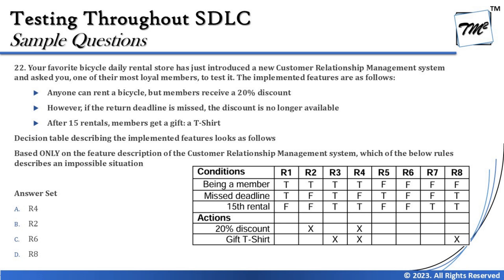The next question is about decision table testing — question number 22. Again, due to space constraints I've aligned the table next to the question, but in the real examination they will be properly positioned. The question says: your favorite bicycle daily dental store has just introduced a new customer relationship management system and asked you, as one of their most loyal members, to test it.